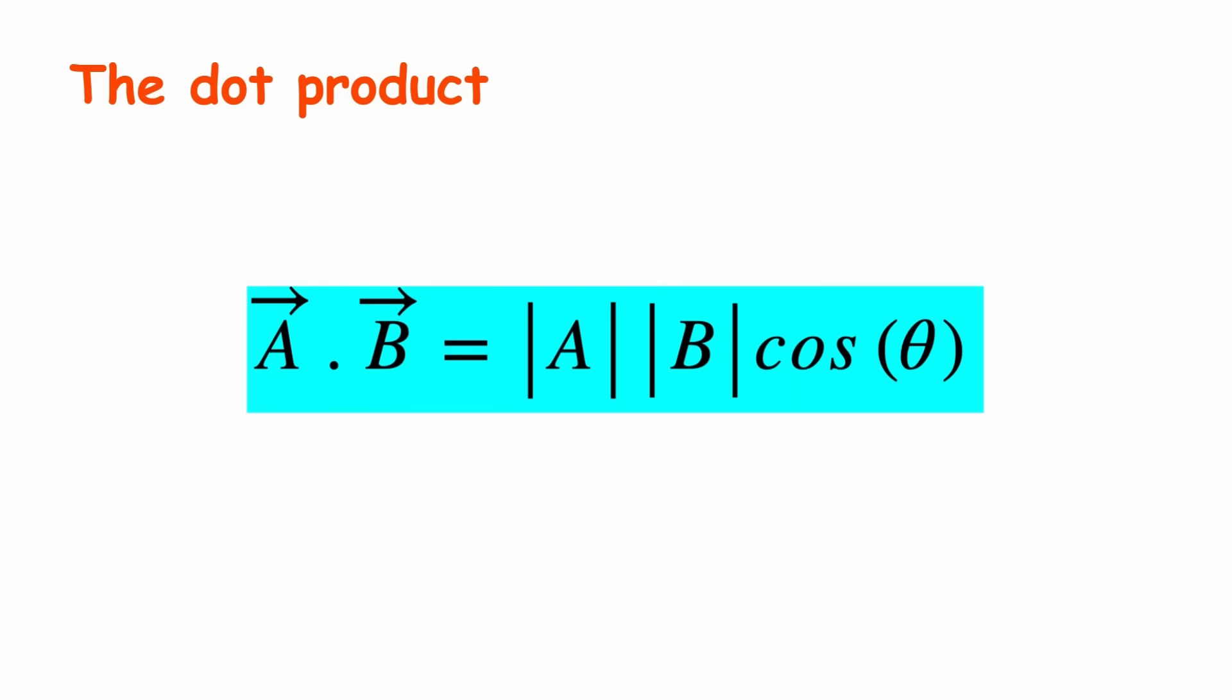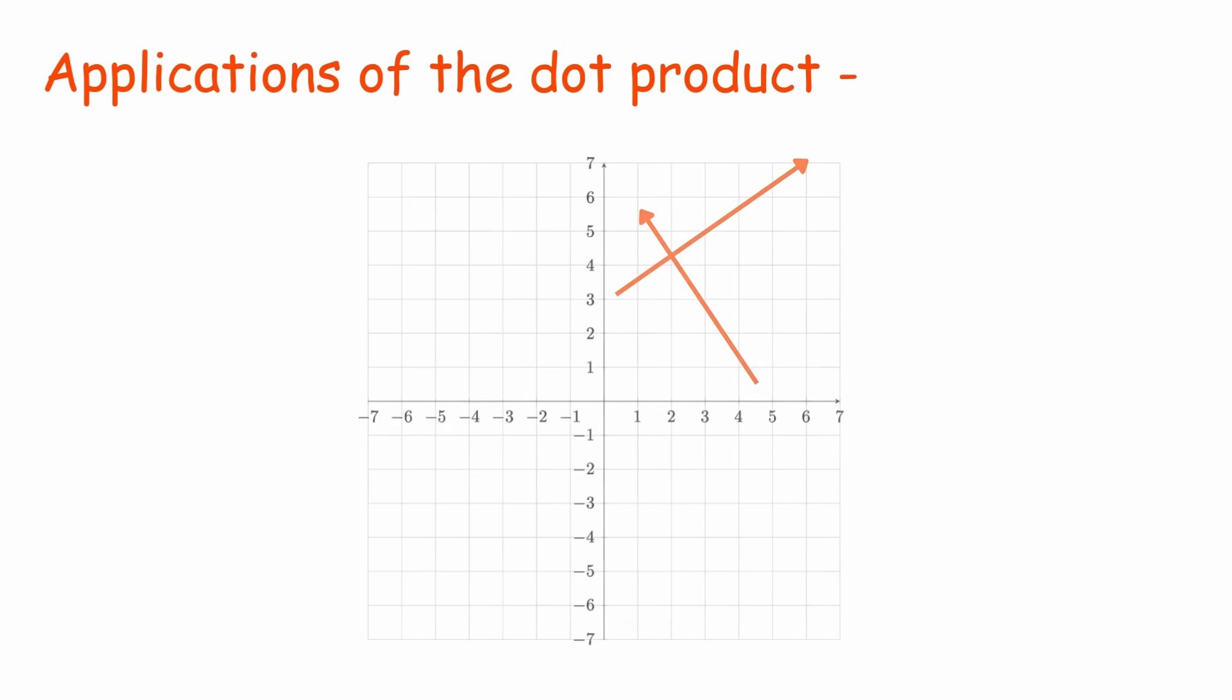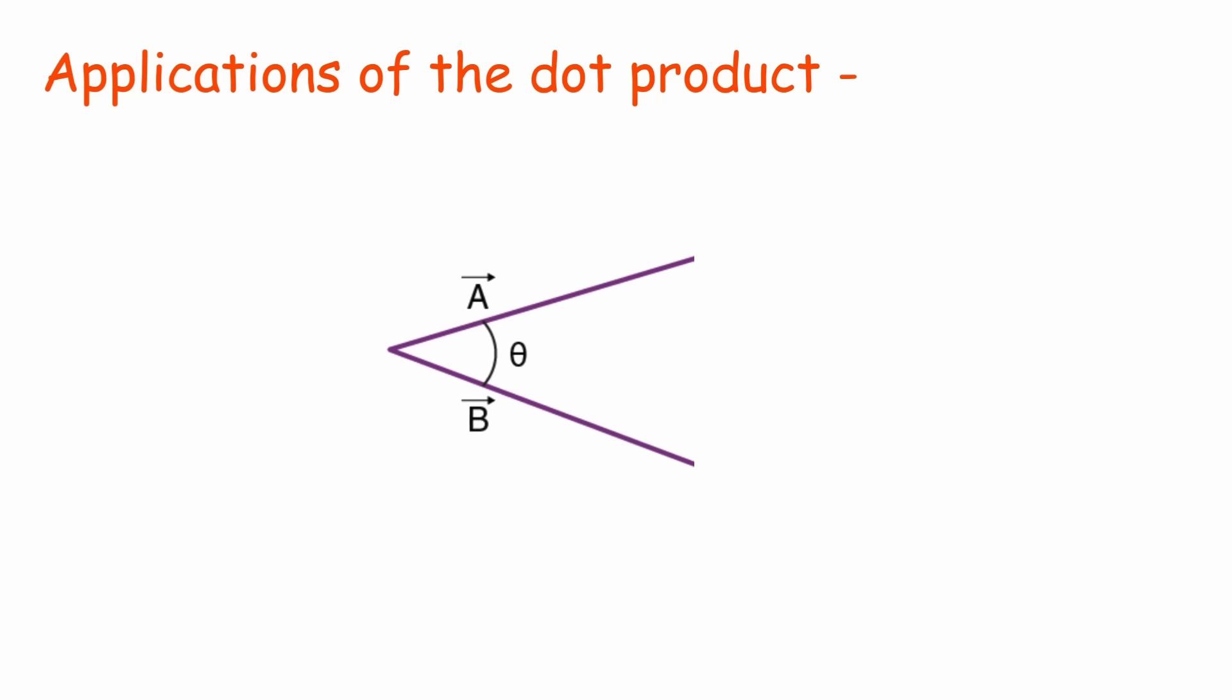Some operations with vectors are the dot product. The dot product has several applications: determine if two vectors are perpendicular, calculate the projection of a vector onto another, finding the angle between two vectors.